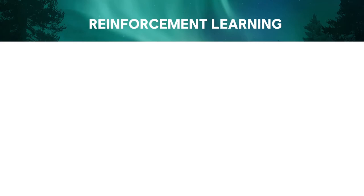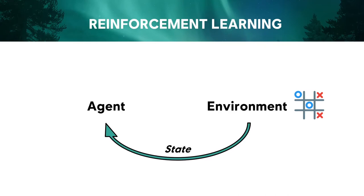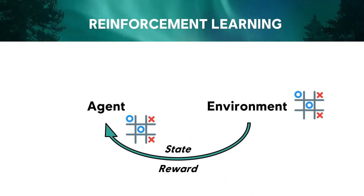I'm going to go over the reinforcement learning loop in the context of a simple game: Tic-Tac-Toe. You have an agent interacting with an environment. The state of the world would be the current board position, which gets passed to the agent along with a reward signal. We give the reward of zero when we don't know if a board state is good or bad. The agent then takes an action — at first probably random. Eventually, you want it to learn the optimal thing to do. Say it stumbles across the action to place the X in the right box to win — the environment says the game is over, you've won, and gives a reward of plus one.